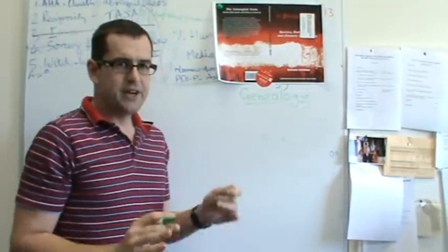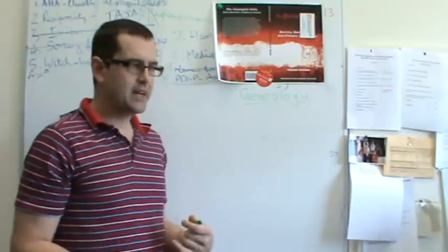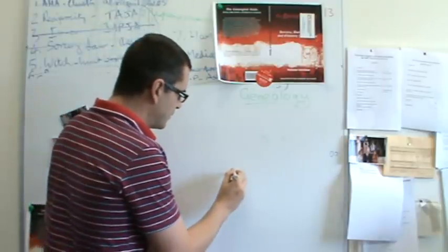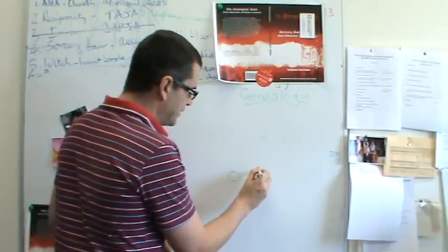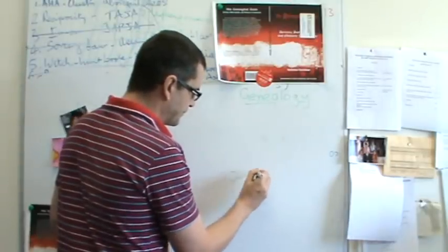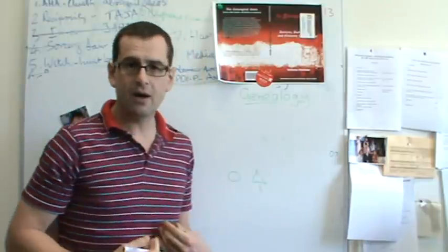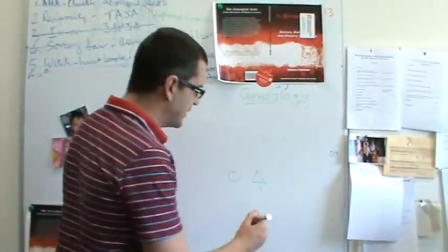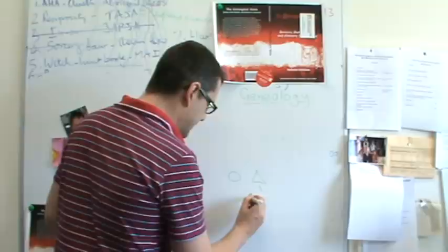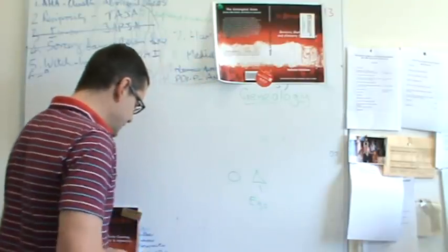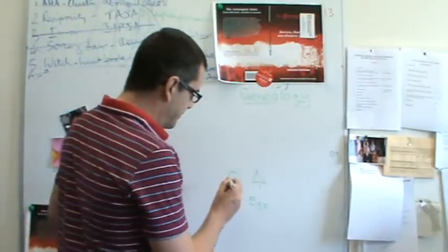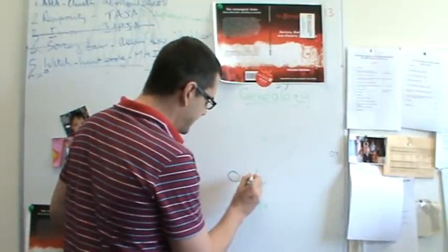So what I want you to do is go down to the bottom of the page and if you're a female, write a circle. And if you're a male, like me, write a triangle. This is going to be my family tree, so I'll write my name under here, which we'll just say is Ego. Ego is the person that the family tree or the genealogy is about.